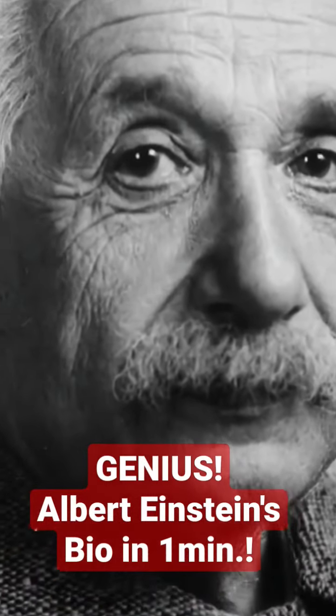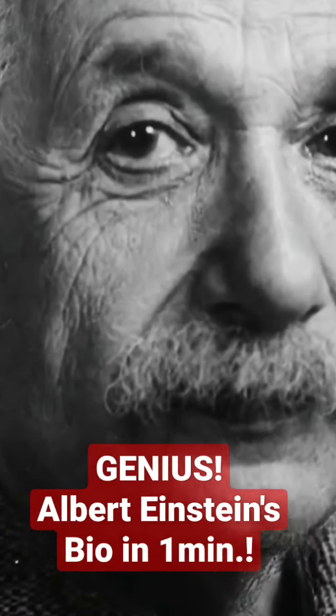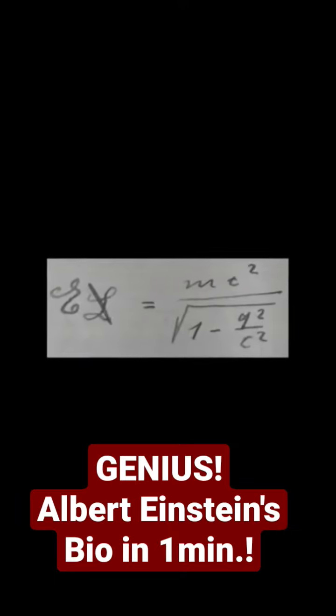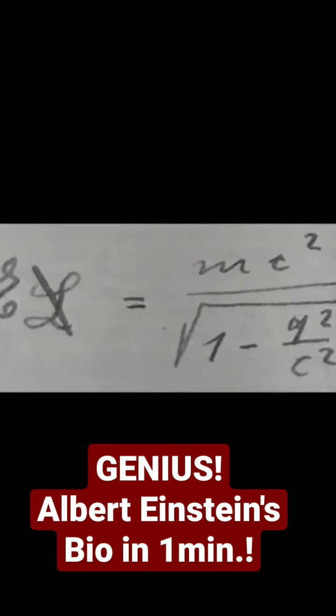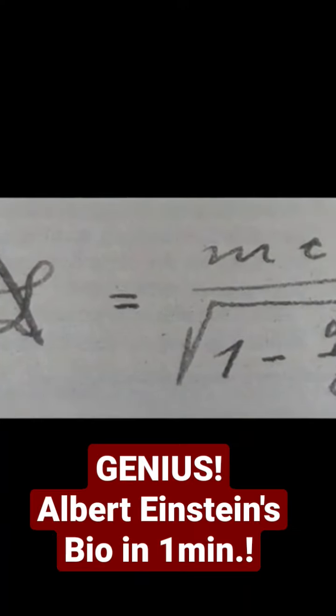Einstein received the 1921 Nobel Prize in Physics for his services to theoretical physics, and especially for his discovery of the law of the photoelectric effect, a pivotal step in the development of quantum theory. His intellectual achievements and originality resulted in Einstein becoming synonymous with genius.